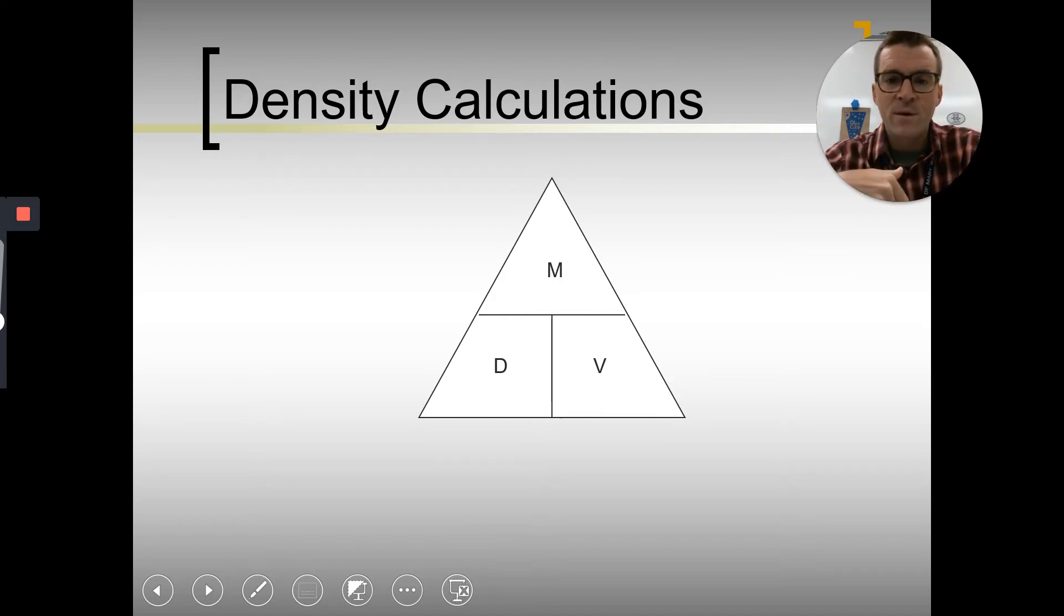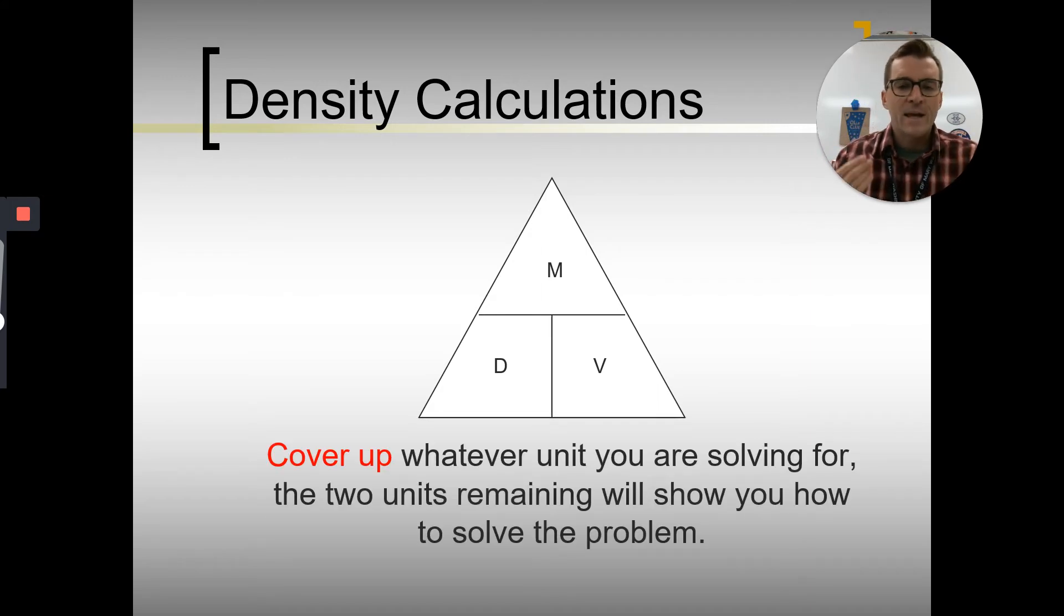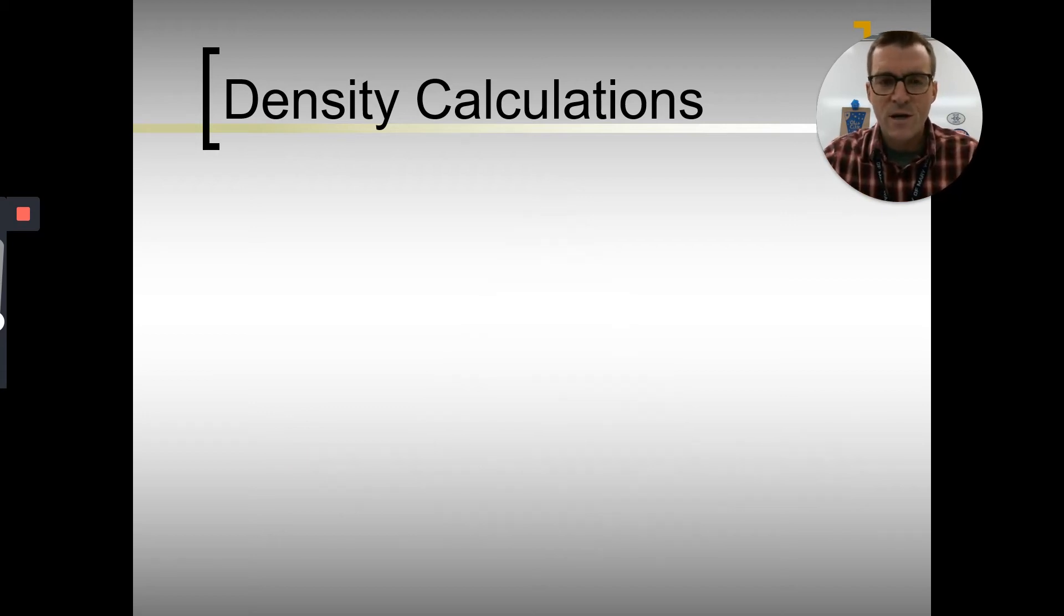So we go mass divided by volume. Guess what? If we're trying to find the mass, we cover the M, and it would just be density times volume. Or if we're trying to find volume in the problem, look, mass divided by density. So just a little way to help you solve, and we'll try a couple. Cover up the unit, or what we're trying to find, and the two units remaining will show us how to solve it.